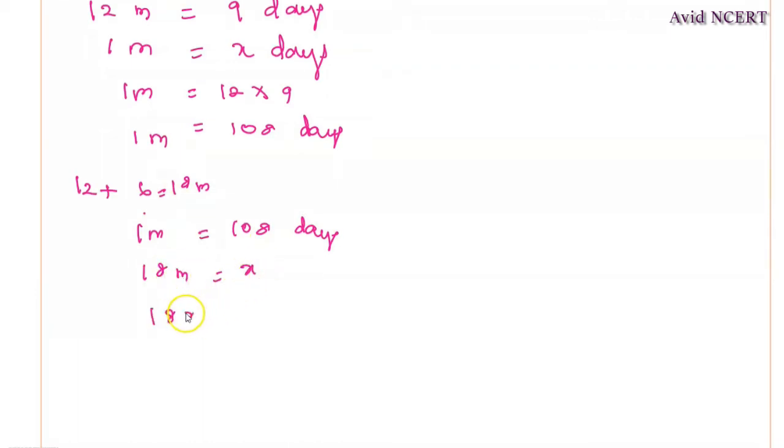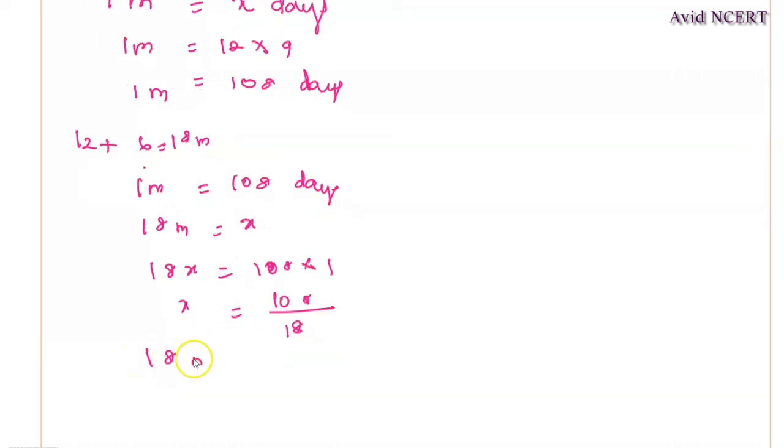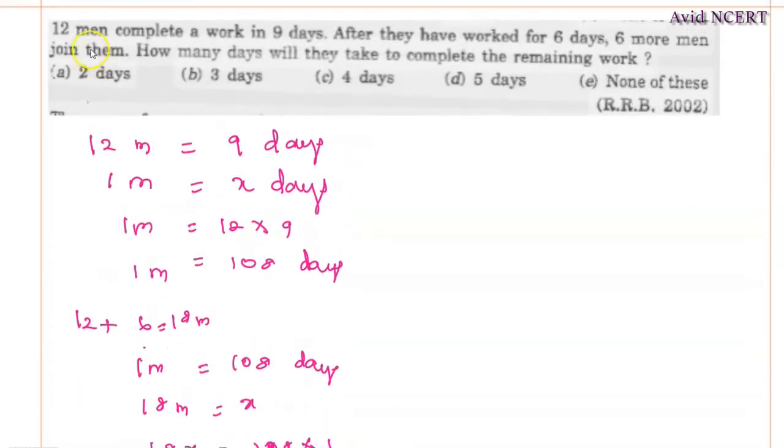18 men into x equals 108 into 1, which is 108. So x equals 108 divided by 18. Therefore, 18 men take 108 by 18 days to complete the work.